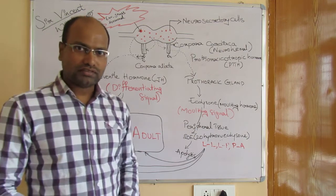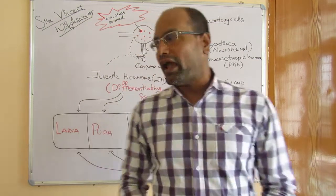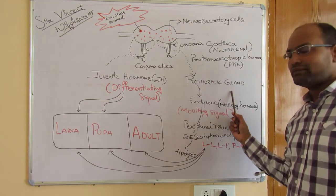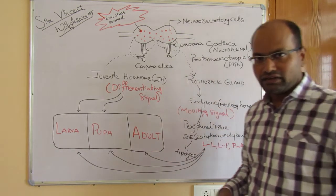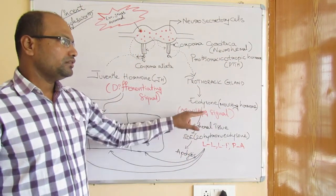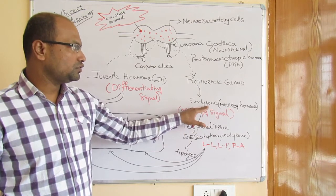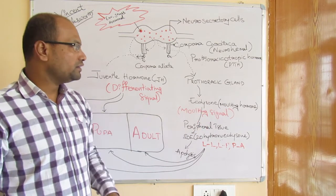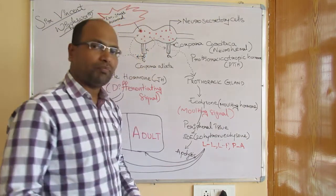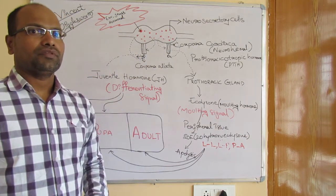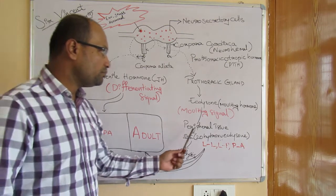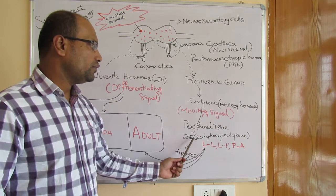This prothoracicotropic hormone is released into the blood circulation. Once released, it acts upon the prothoracic gland. The prothoracic gland, upon activation by PTTH, produces the molting hormone known as ecdysone. Ecdysone then enters the circulation and reaches the peripheral tissues where metamorphosis is occurring.